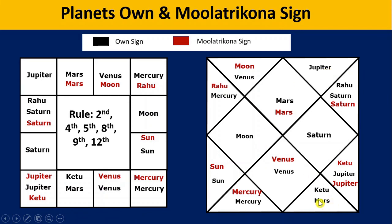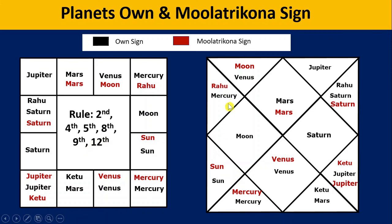Now let's think about Mercury — what does Sun think about Mercury? The Mulatrikona sign of Sun is Leo. From Leo, Mercury's sign Virgo is at the 2nd position, and Gemini is at the 11th position. Second is mentioned in the friendly positions but not the 11th. Since one position is mentioned and the other is not, Sun treats Mercury as neutral.